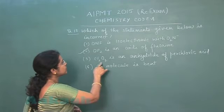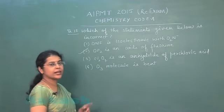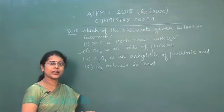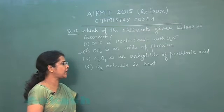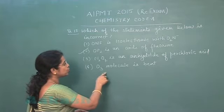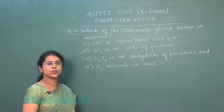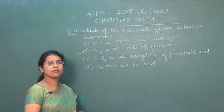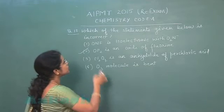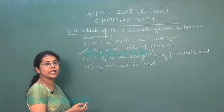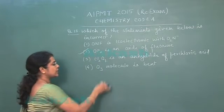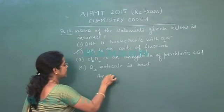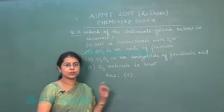Third one is Cl2O7 is an anhydride of perchloric acid. That is true - it is obtained from dehydration of perchloric acid. Fourth option is O3 molecule is bent. That is true - O3 molecule is having a bent shape. So in this question we have to find out the incorrect statement, and second statement is incorrect, so correct answer should be the second option.